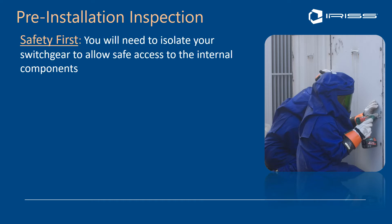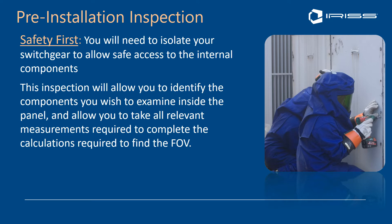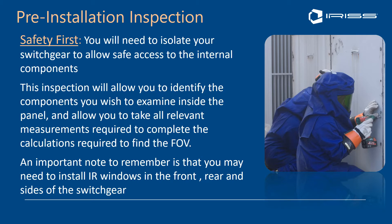Safety is obviously paramount. You should isolate your switchgear to allow safe access to internal components before doing this inspection. The inspection will allow you to identify the components you wish to examine inside the panel and to take any relevant measurements required to complete the field of view calculations, which we covered in webinar five of this series. You may need to install IR windows in the front, rear, or sides of the switchgear to ensure complete measurements.